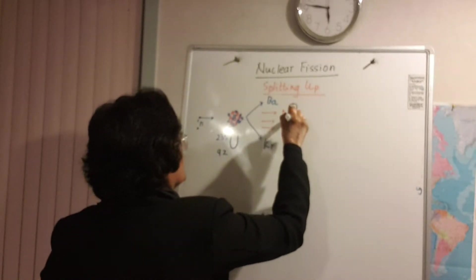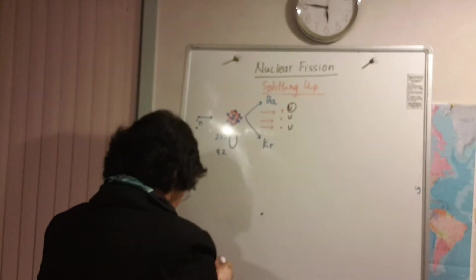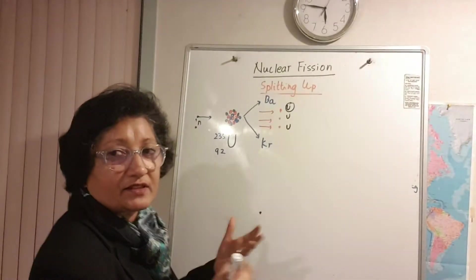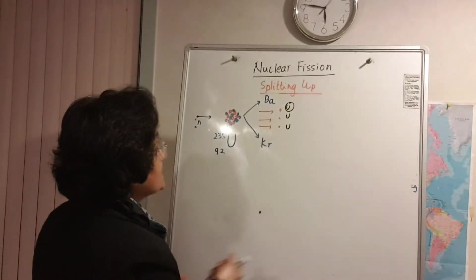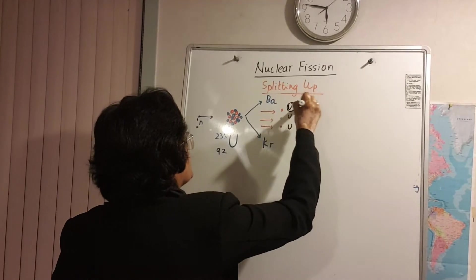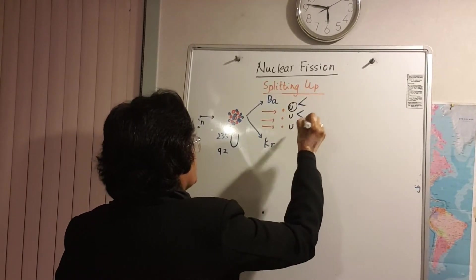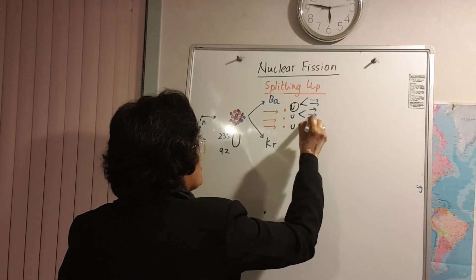Now each of these neutrons could be theoretically absorbed by other uranium nuclei because in a sample there are millions and millions of atoms, and each of those split into two and each of them give out more neutrons.